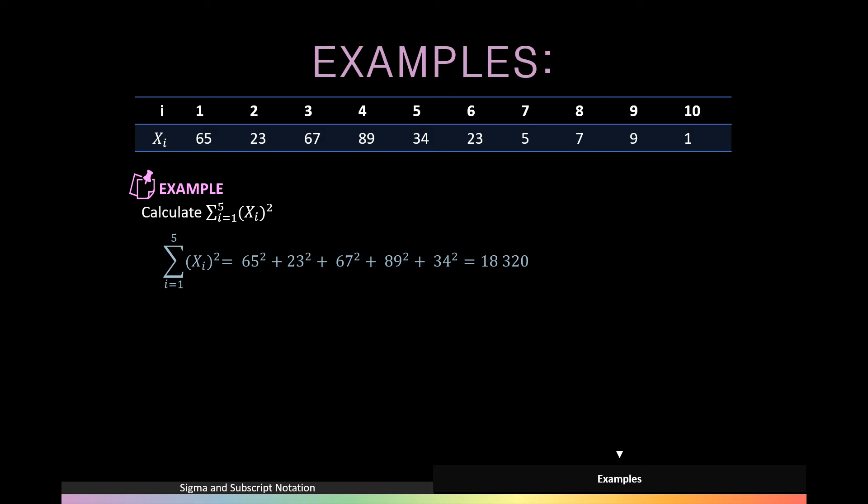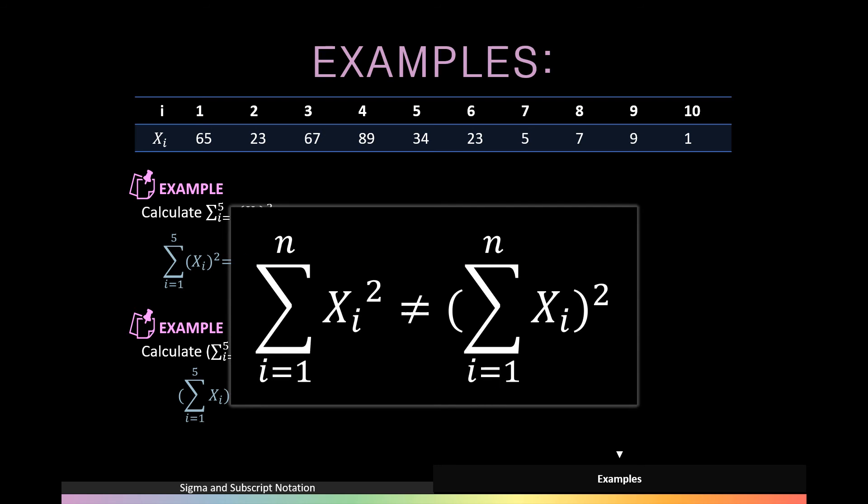The next example is to calculate the summation of Xi from i is equal to 1 to 5 all squared. We would do this by summing the individual values and then squaring the result to get an answer of 77,284. And this shows us that the summation of a squared value is not equal to the square of a summation.